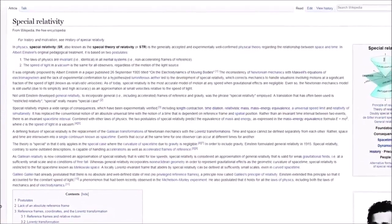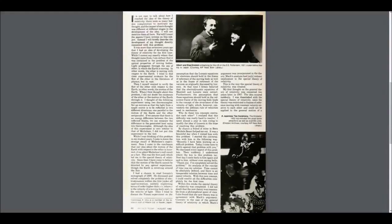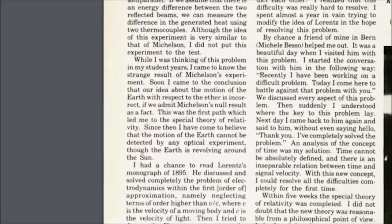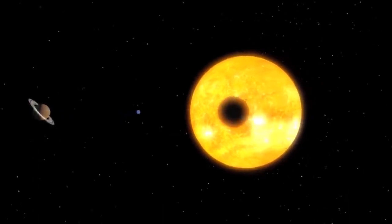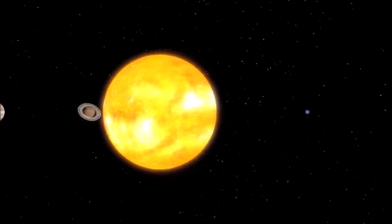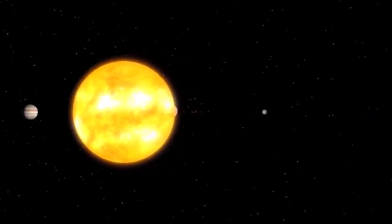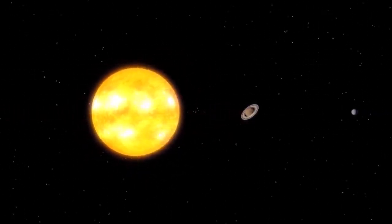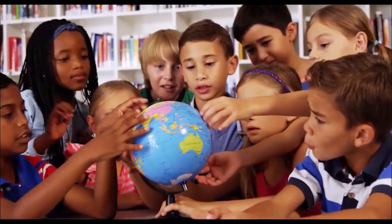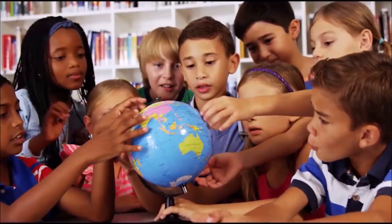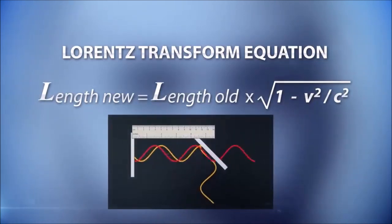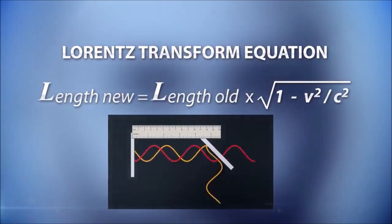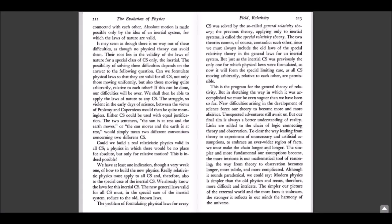That Einstein believes the earth is moving but has no proof for it as noted in his statement, I have come to believe that the motion of the earth cannot be detected by any optical experiment, though the earth is revolving around the sun. Einstein's admission merely begs the question, if on one scientific basis he can't detect the earth moving, how does he know the earth is moving? The truth is, he doesn't know. He just assumes it to be so, since that is what he has been taught since childhood. In fact, the transform equation is then invoked to make it appear as if the earth is moving around the sun, but in reality the transform equation is just an equation that has no ability or authority to determine the issue.